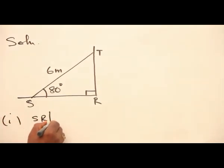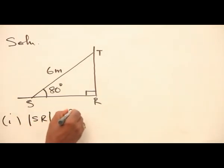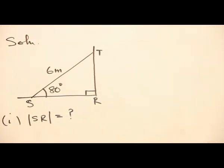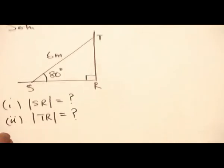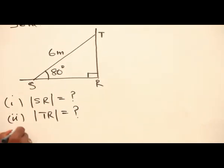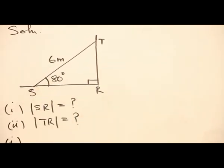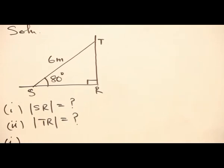The second one, we are to find the height at which the upper end of the ladder touches the wall. The second one is for us to find TR. If you look at the diagram, it is a right-angled triangle.